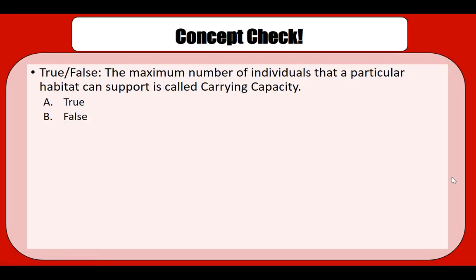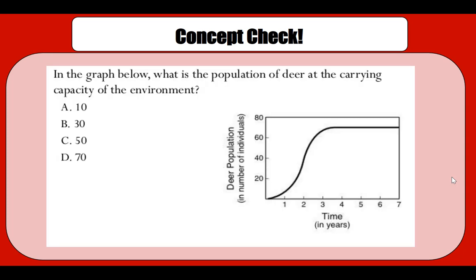Let's do a quick concept check. The maximum number of individuals that a particular habitat can support is called carrying capacity — true or false? True, very good. Now let's look at some examples of carrying capacity by looking at this graph.